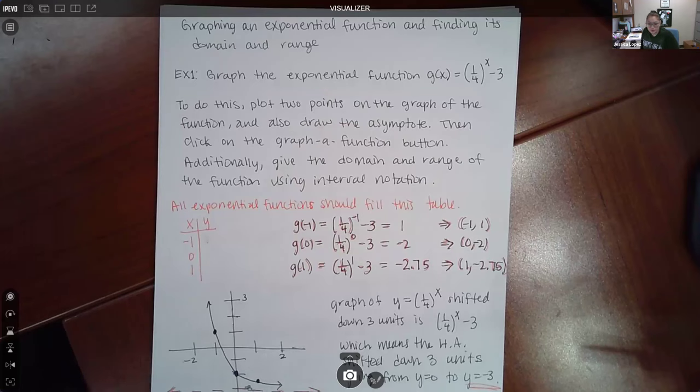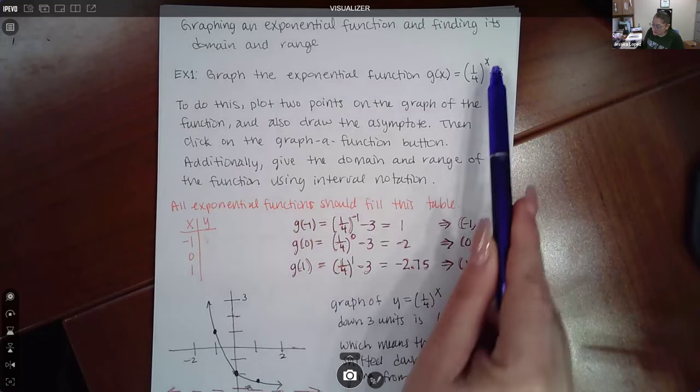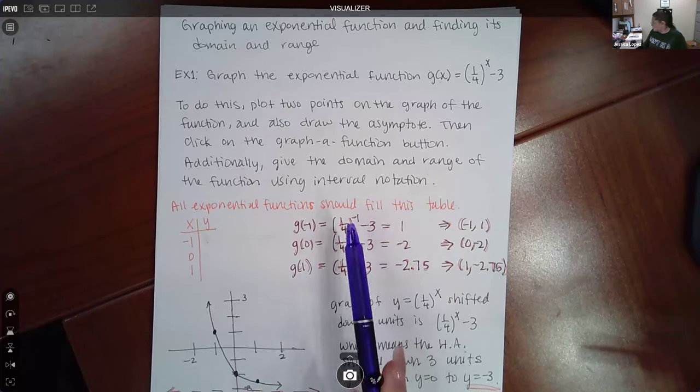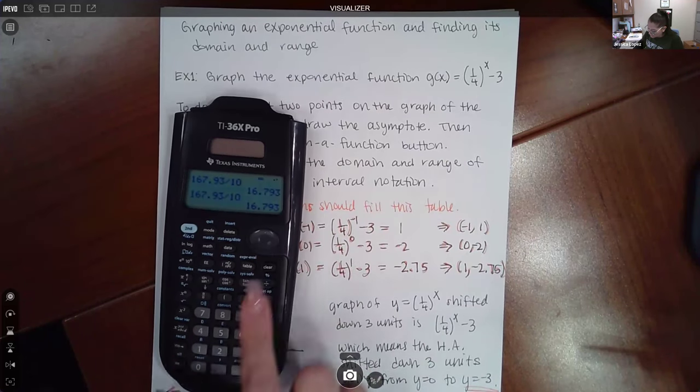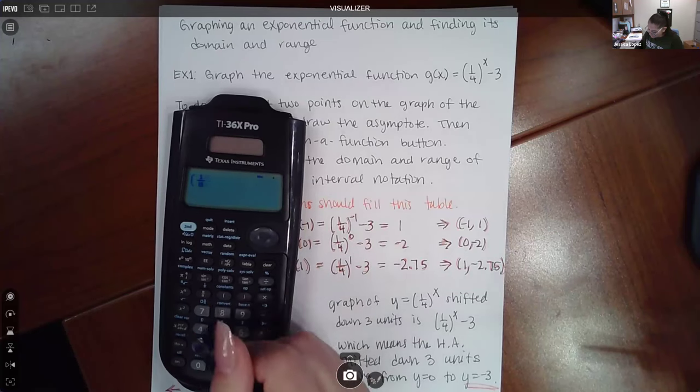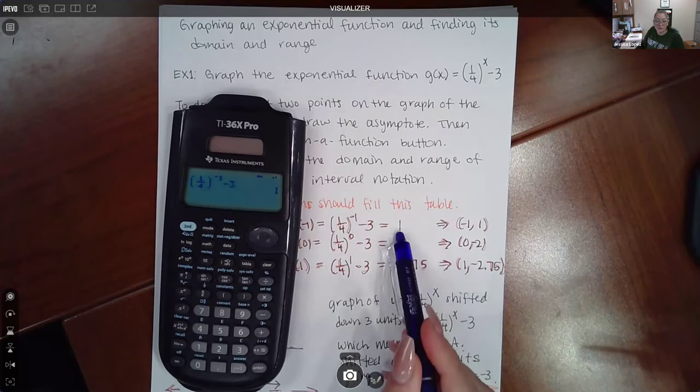When you're trying to find the y value for x equal to negative one, you're essentially just plugging negative one into that g function, replacing this x in the exponent. I typed this entire expression in my calculator: parentheses, fraction one over four, close parentheses, raise it to the negative one, and minus three, and I get the value one.